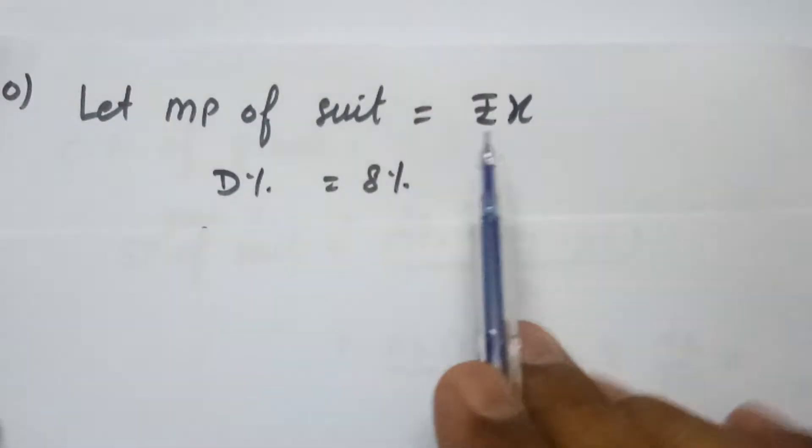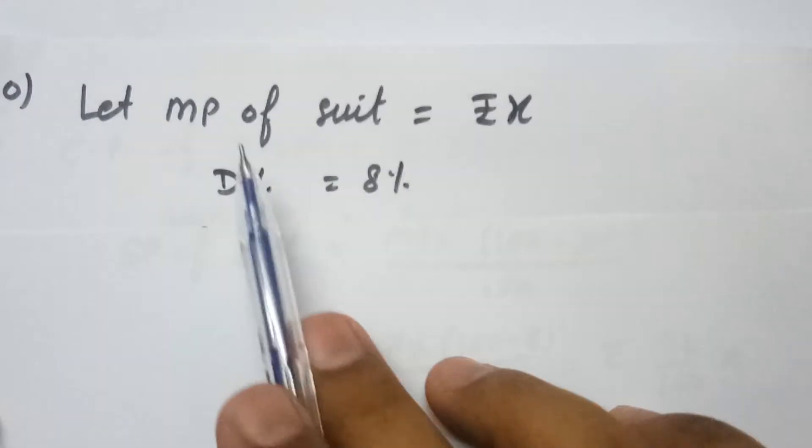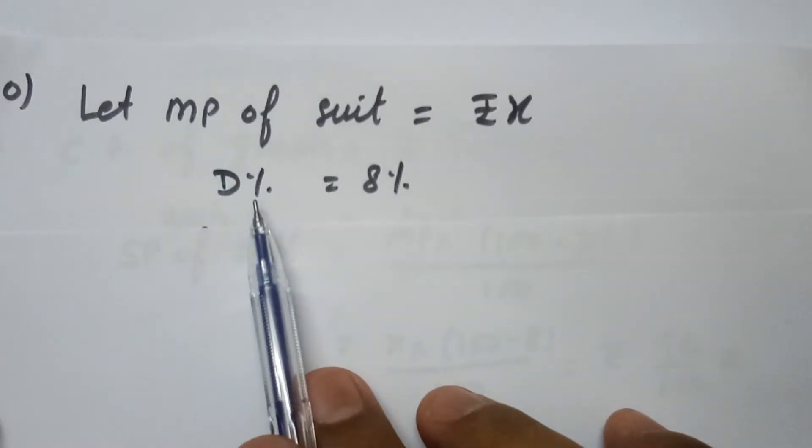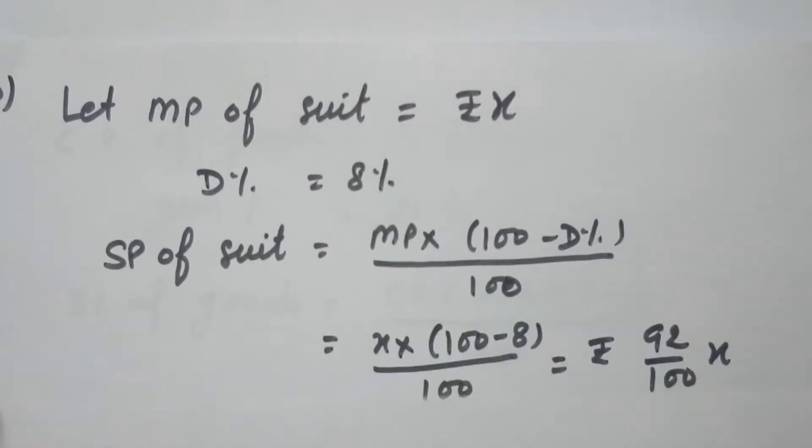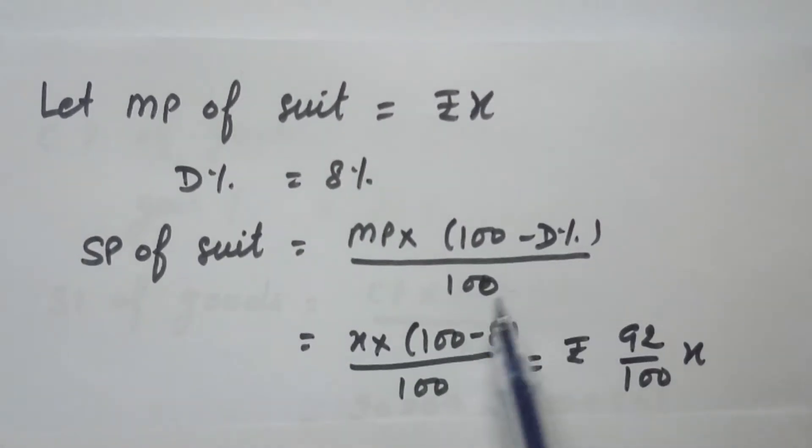So we will suppose that the mark price of the suit is Rs X and discount percent is given 8%. Mark price is given, discount is given, so we can calculate selling price. Selling price of suit equals to MP times 100 minus discount percent over 100.